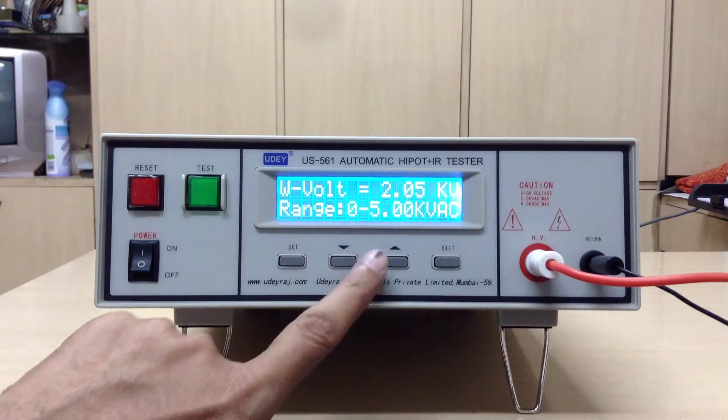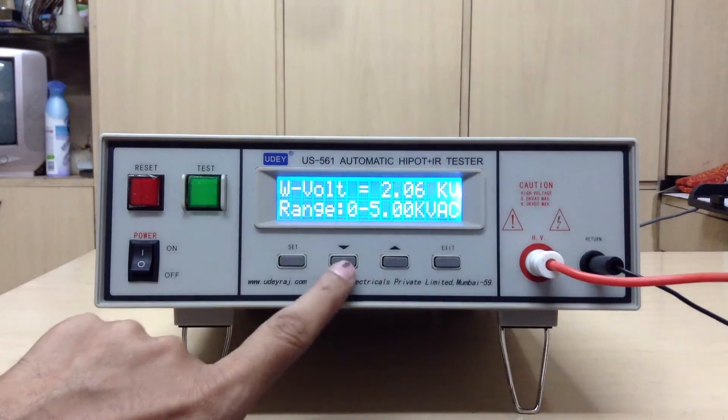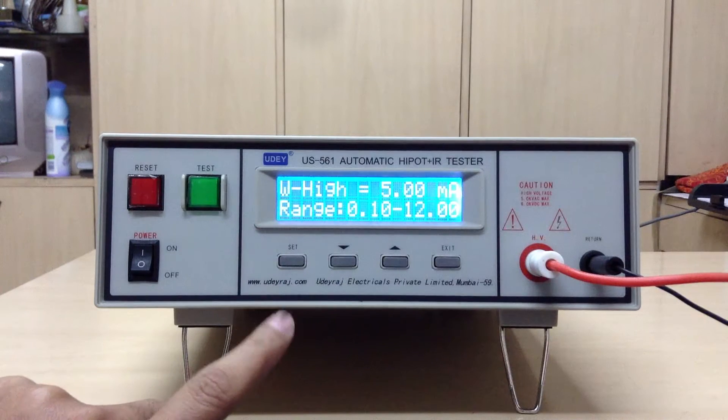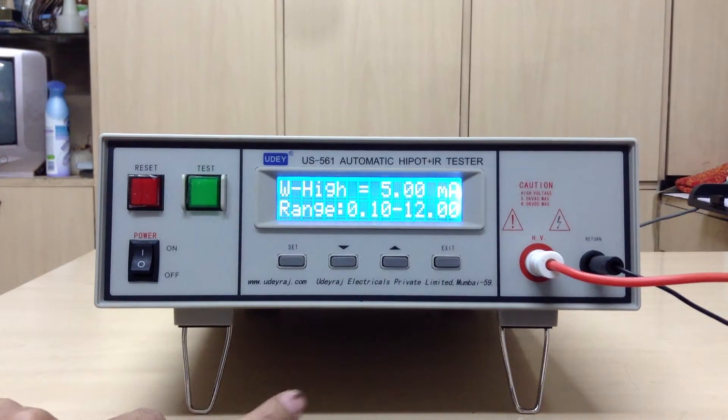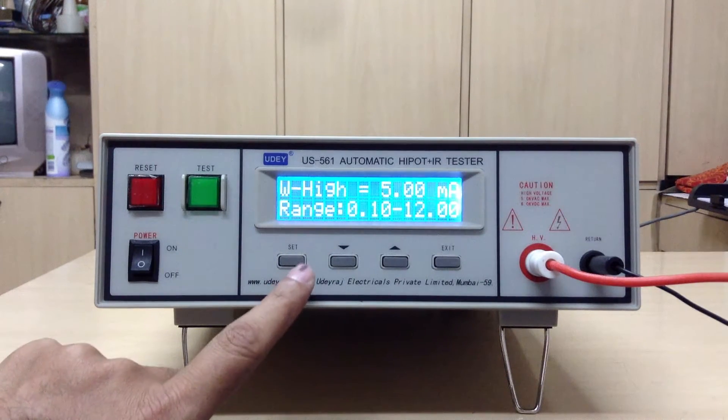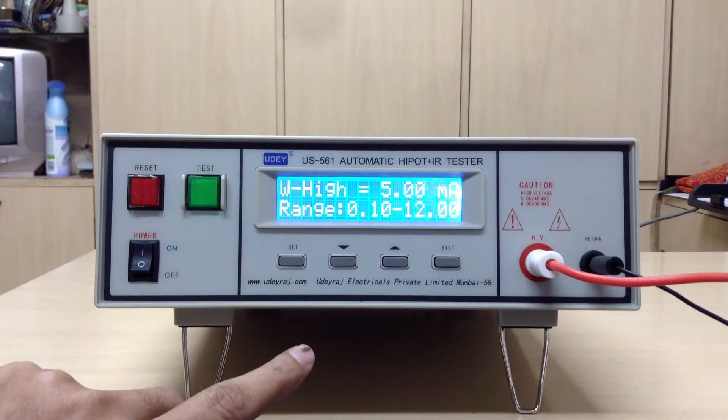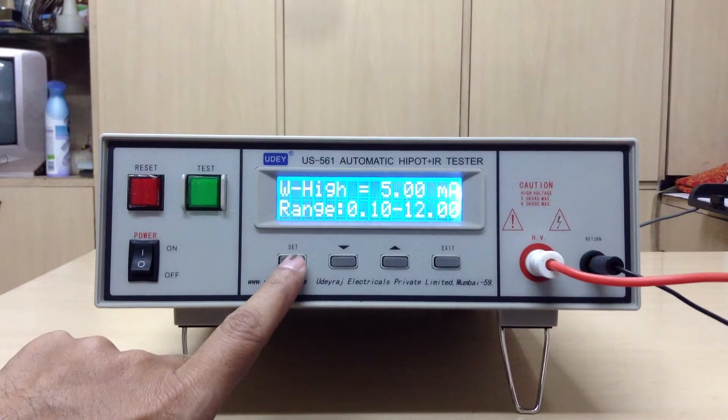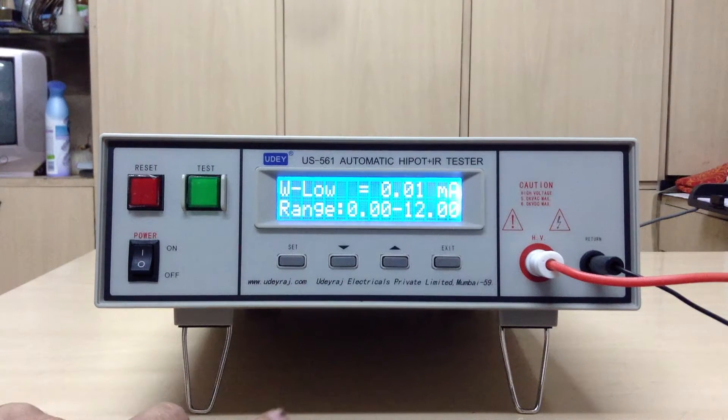Then in MA range you have from 0.10 to 12 MA in AC and 0.02 to 5 MA DC. Then you go to lower range which is 0.00 to 12 MA AC and 0.00 to 5 MA DC.